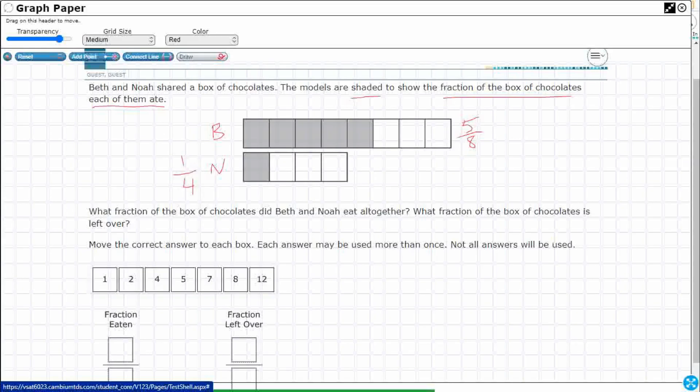So what fraction of the box of chocolates did they eat all together? Well, I need to add. Let me write the 5/8 over here. I need to add 5/8 and 1/4. Well, as you can see, it's not the same denominator. But take a look at this, what Noah ate.